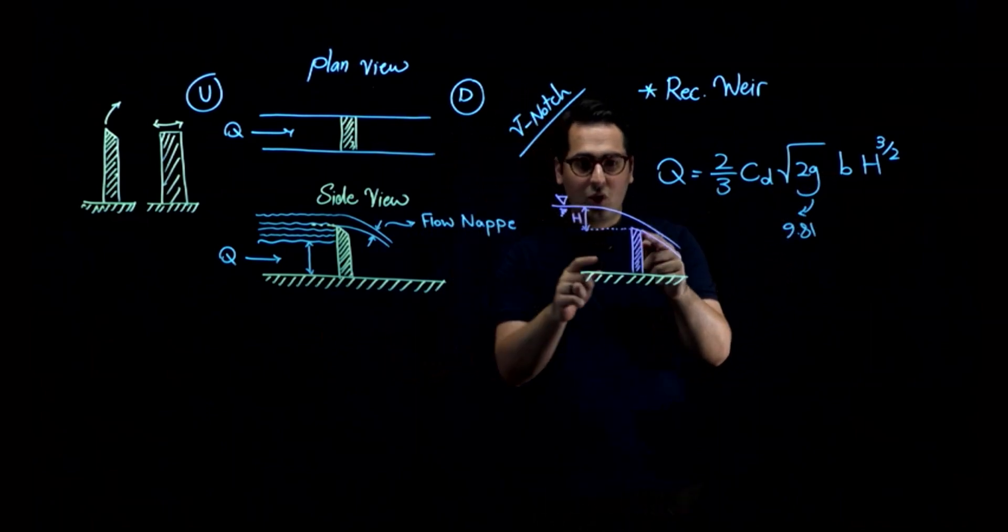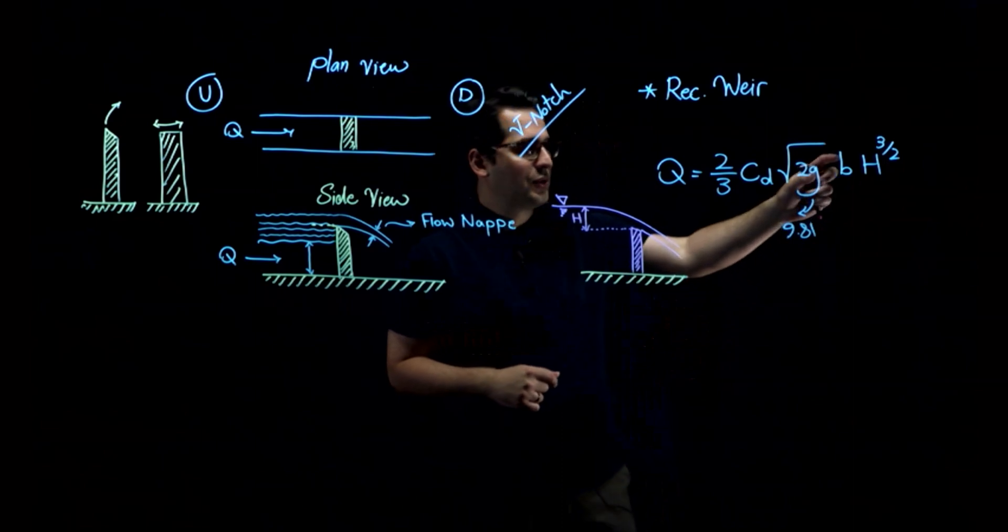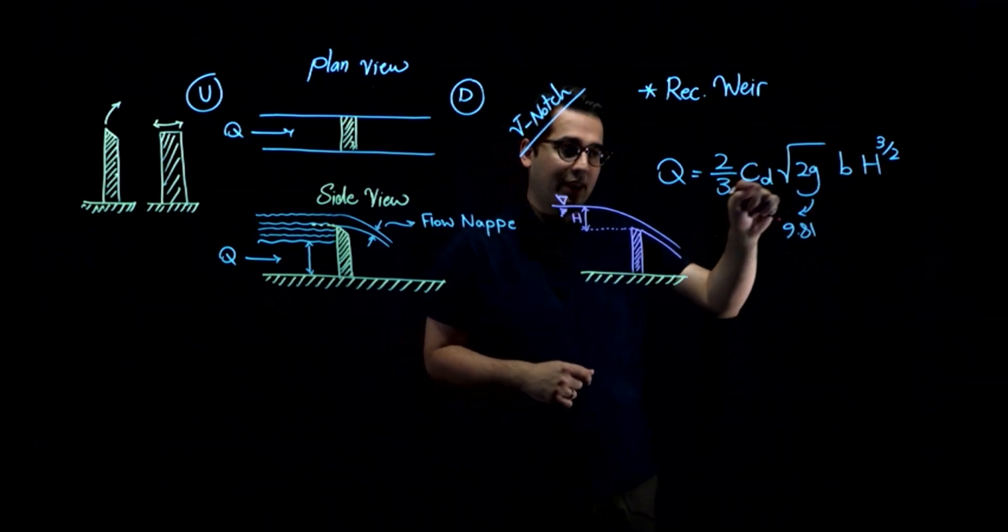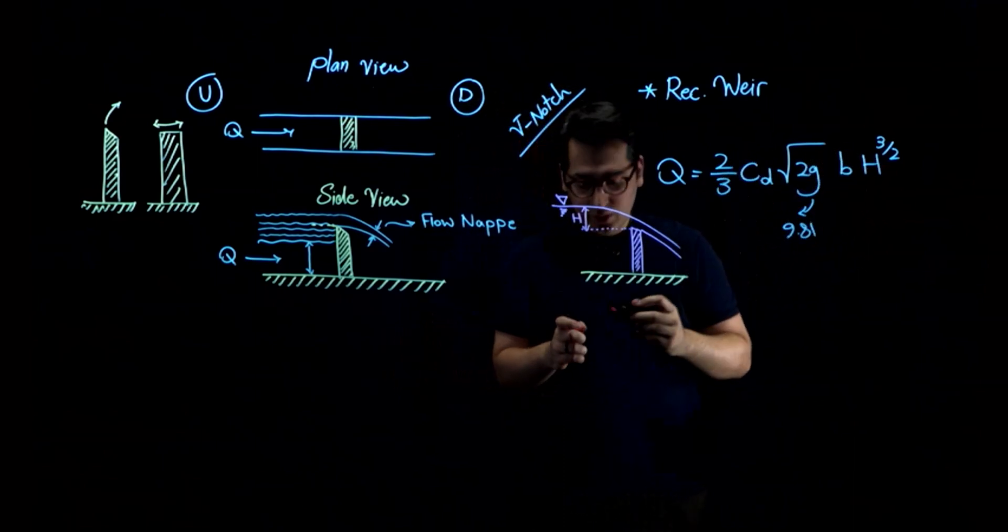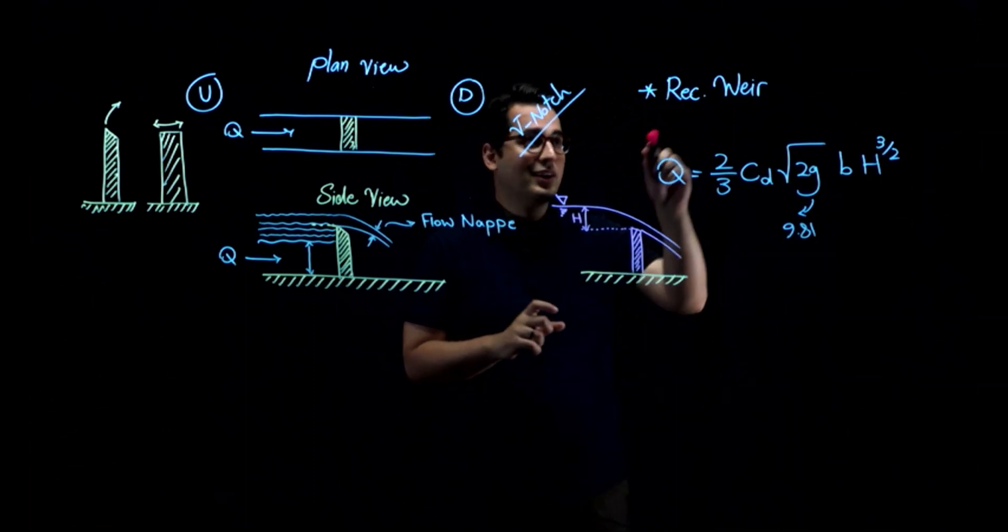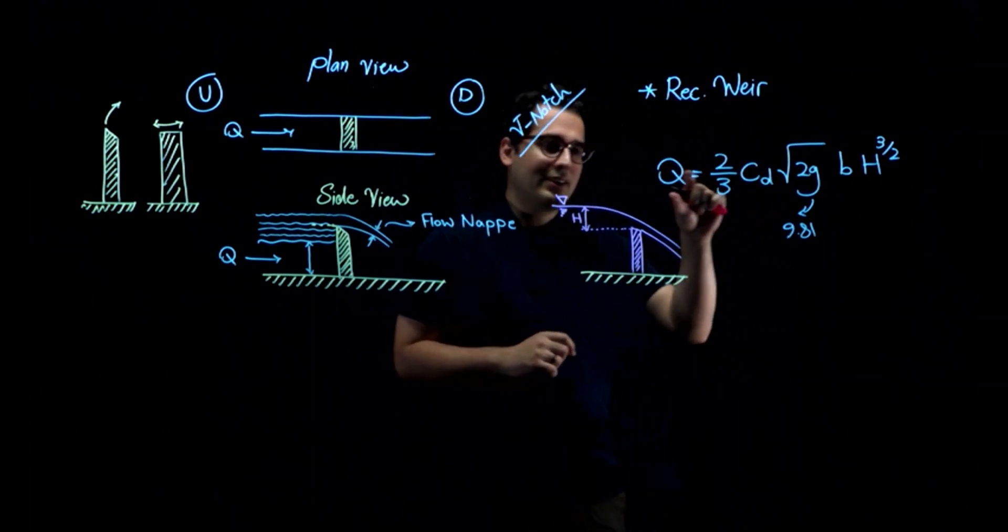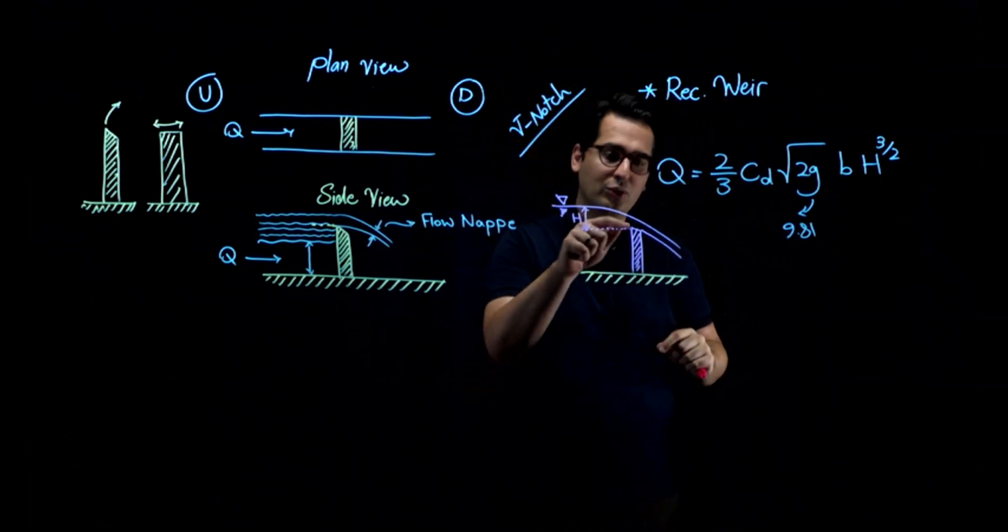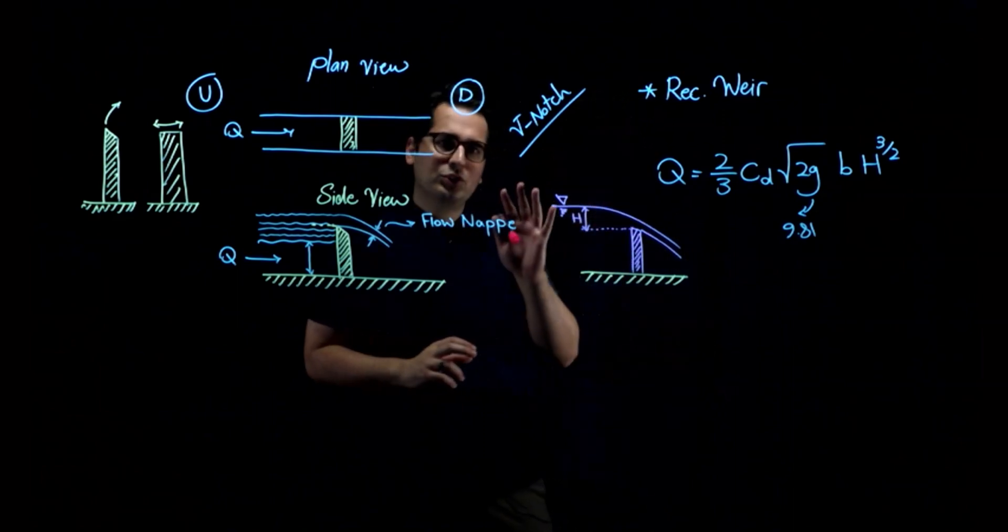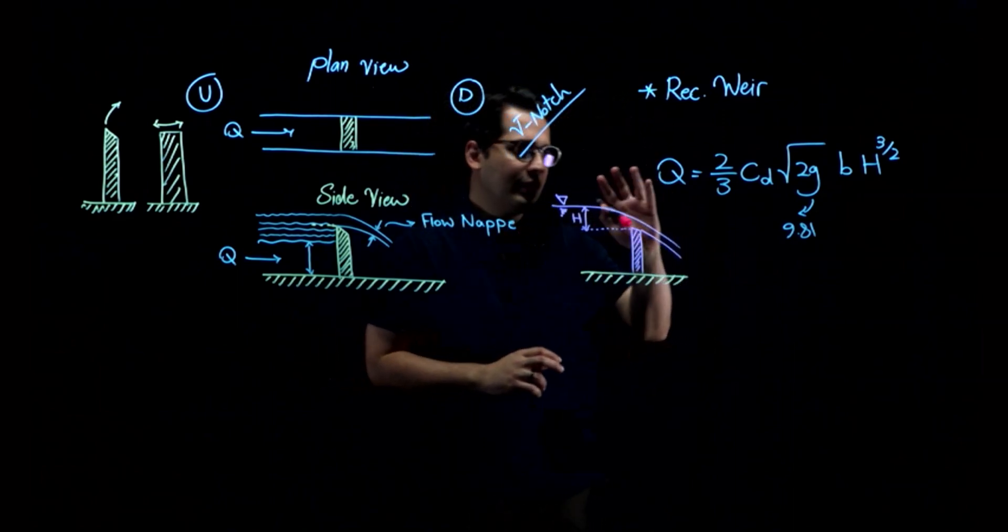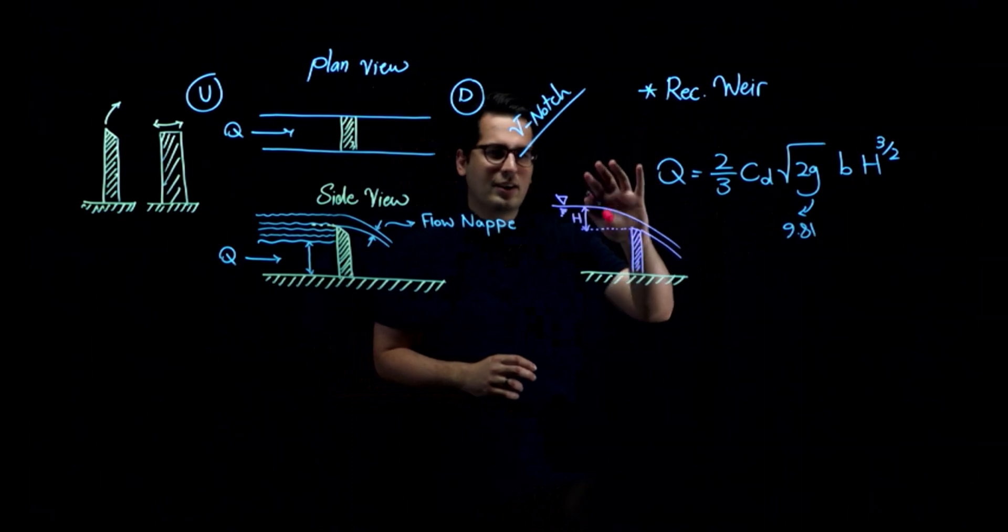And B, again, is the width of the opening of the weir. So if I have these two numbers and I have CD based on different equations and different charts for different types of weirs, I can calculate the flow of water that goes over the weir.